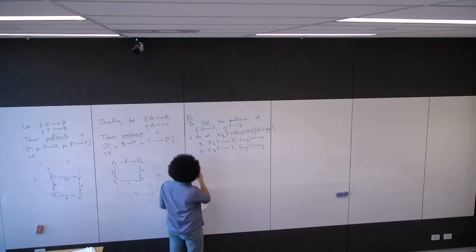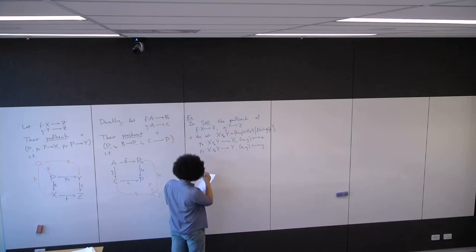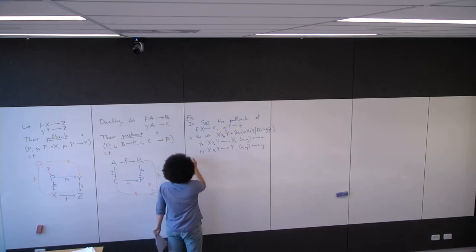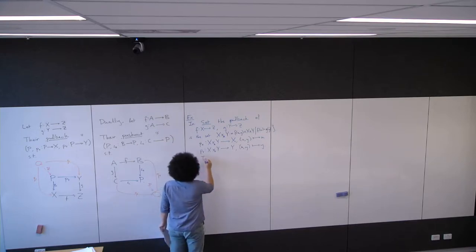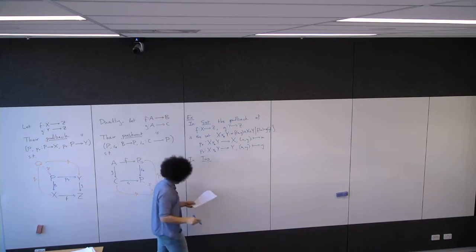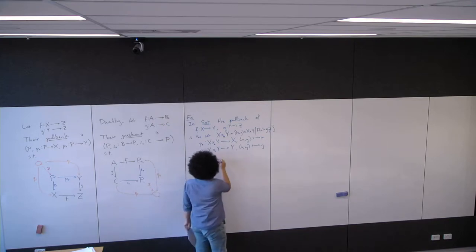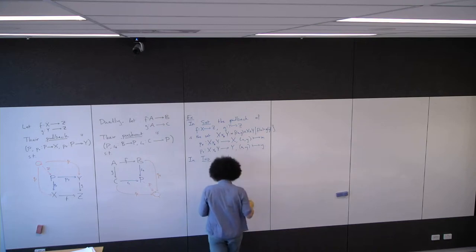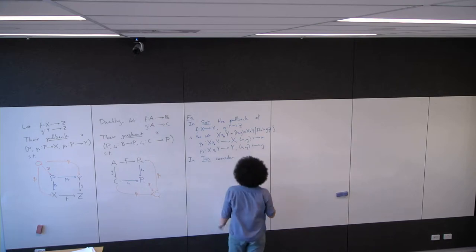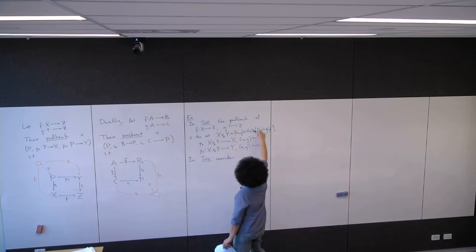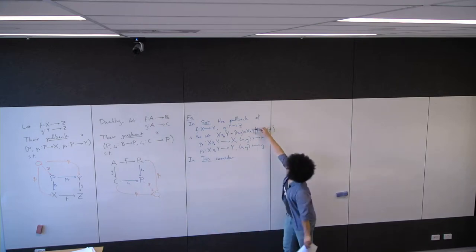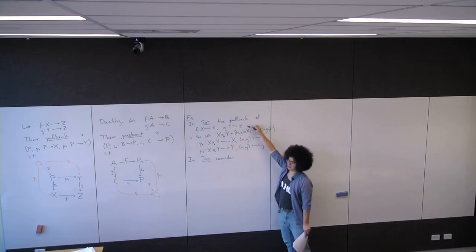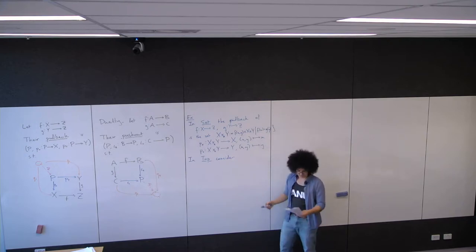Now we'll consider a pushout in the category of topological spaces. We consider a specific pushout. This was a pullback of any two morphisms; now we're going to think about specific morphisms.